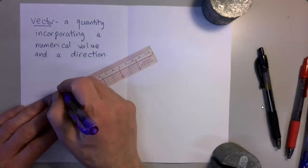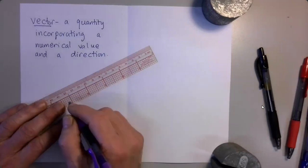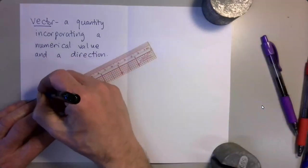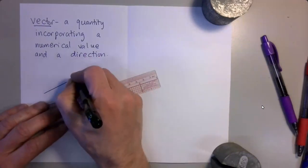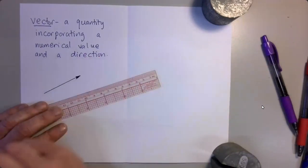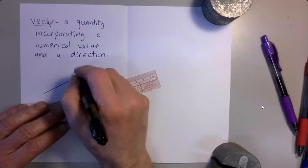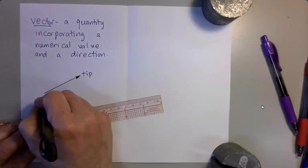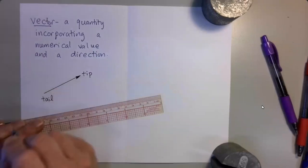Suppose we would like to represent a vector quantity graphically. To represent a vector quantity graphically, we draw an arrow. The pointy end of the arrow is referred to as the tip of the vector. The other end is called the tail.